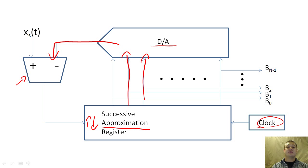If the input voltage is greater than the approximated voltage, then we increment our approximation. Otherwise, we decrement the approximation. This circuit will slowly approach the best binary encoding for x sub s.